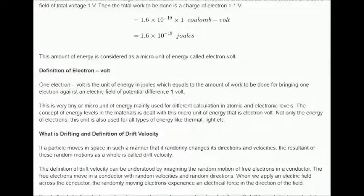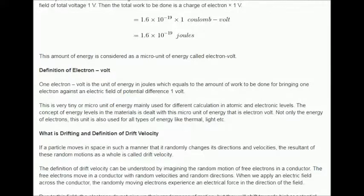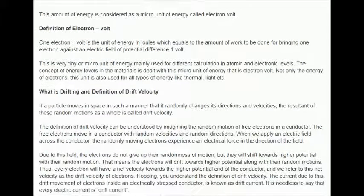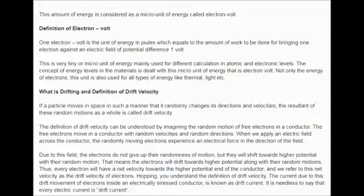What is drifting and definition of drift velocity? If a particle moves in space in such a manner that it randomly changes its directions and velocities, the resultant of these random motions as a whole is called drift velocity. The definition of drift velocity can be understood by imagining the random motion of free electrons in a conductor. The free electrons move in a conductor with random velocities and random directions.